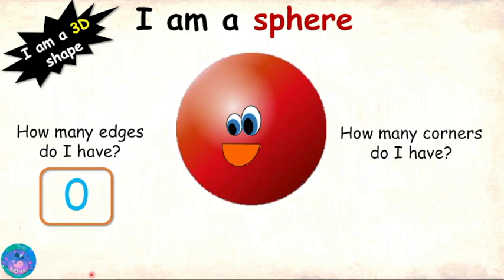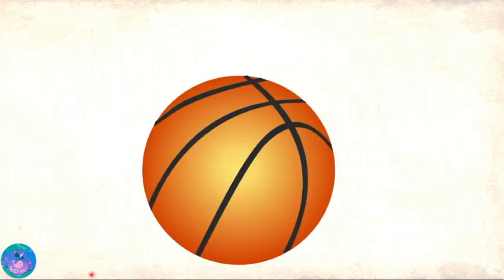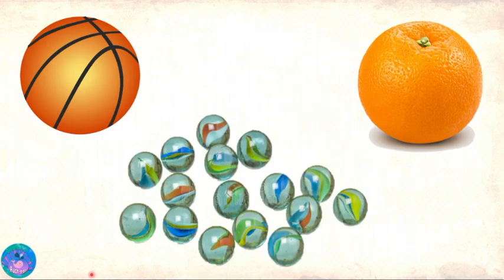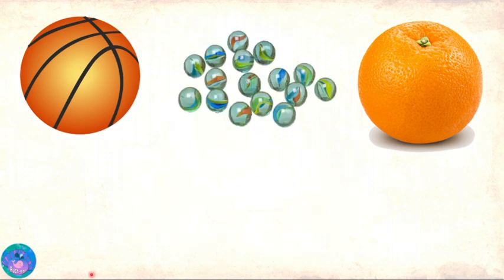Right. And how many corners do I have? Zero again. Corners are formed when three or more faces meet, and you have only one face. Now you know me well. Can you identify some objects that have my shape? Of course. There's a basketball, then an orange, and these glass marbles. All of these are of sphere shape, or I can say they are spherical. Awesome, Zoe. Now it's time for me to go. Bye-bye.